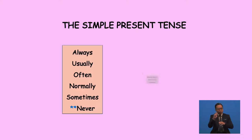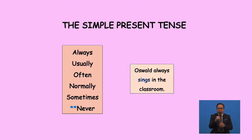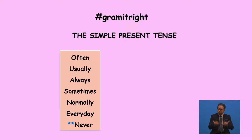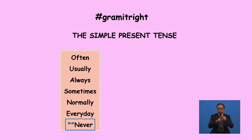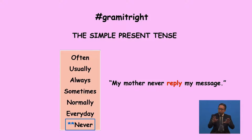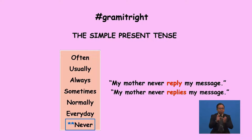Look at the sample sentence: 'Oswald always sings in the classroom.' Underline or highlight the word 'always'. It hints us that this sentence did not happen in the past, so we use simple present tense. 'Never' is a very special case — we use simple present tense as well, even though the action is not done. For example: 'My mother never replies to my message.' We cross the consonant Y and change the word form to 'replies'.